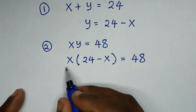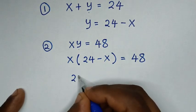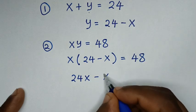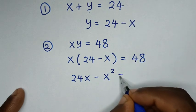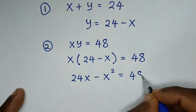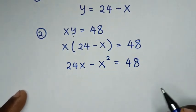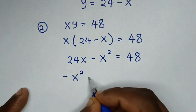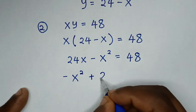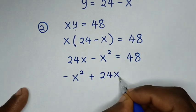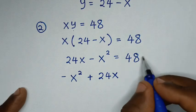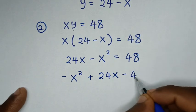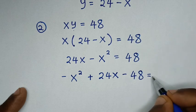Then here it will be x times 24, it is 24x; x times negative x is negative x squared, is equal to 48. Then we rearrange: negative x squared plus 24x, then we take 48 to the left side, so it will be minus 48 is equal to 0.